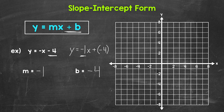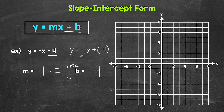Again, slope of negative one and y-intercept of negative four. For our slope, let's write this in fractional form so we can see our rise and run. All we need to do is put negative one over one. And now we can clearly see that our rise is negative one and our run is positive one.